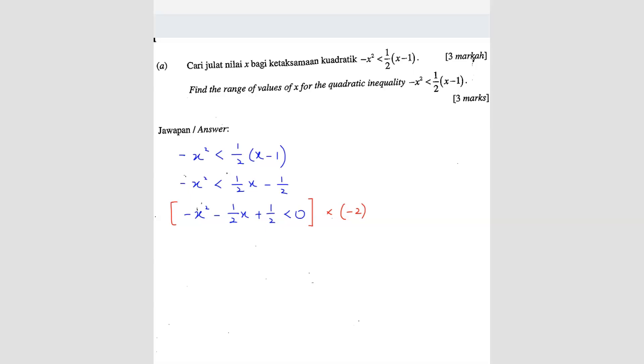So I will get 2 x square plus x minus 1. Then because I'm multiplying negative value, so this sign must change. So you get more than 0.